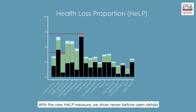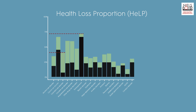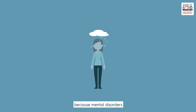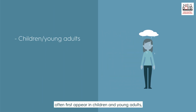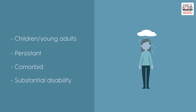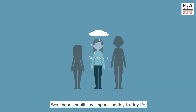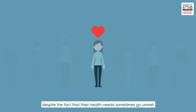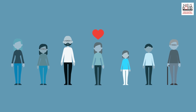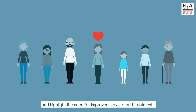With the new HELP measure, we show never-before-seen details of how mental disorders contribute to health loss at the individual level. People with mental disorders live with substantial health loss because mental disorders often first appear in children and young adults, often persist for many years, often are comorbid with other types of mental disorders, and often are associated with substantial disability. Mental disorders are common — about one in three of us will have a mental disorder during our life. Even though health loss impacts day-to-day life, people with mental disorders are able to maintain productive and valued lives, despite the fact that their health needs sometimes go unmet. We hope that our findings bring attention to the experiences of people living with mental disorders and highlight the need for improved services and treatments.